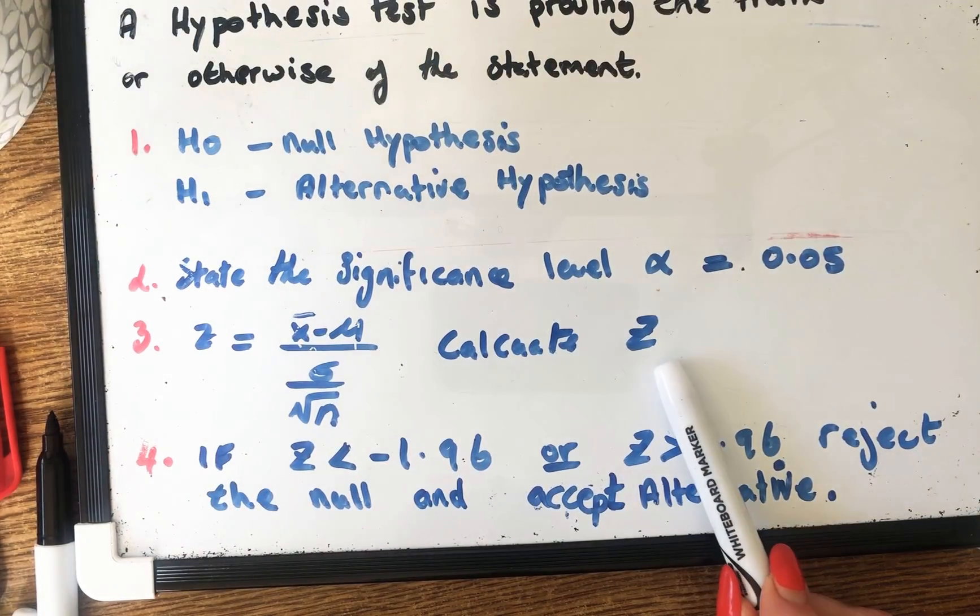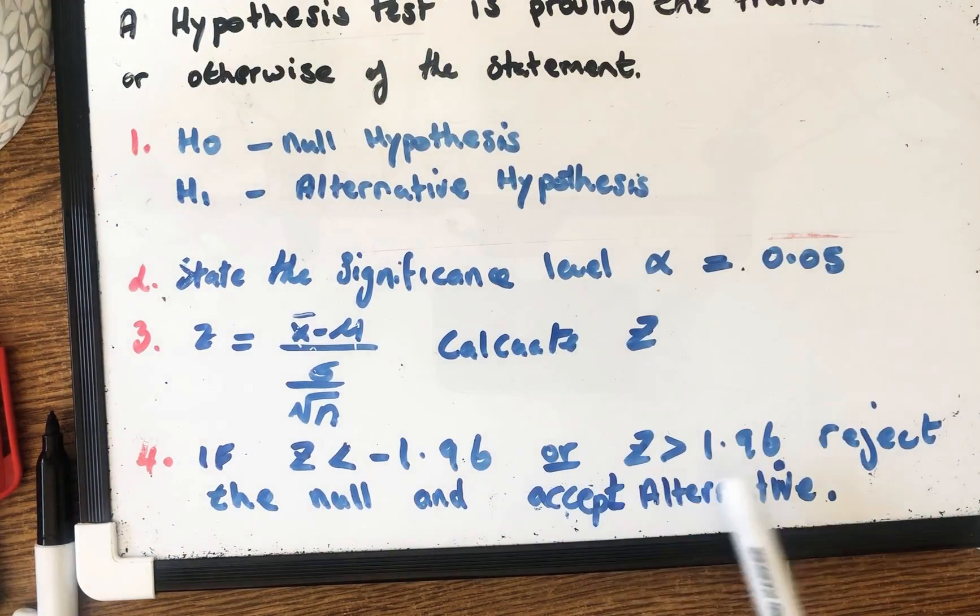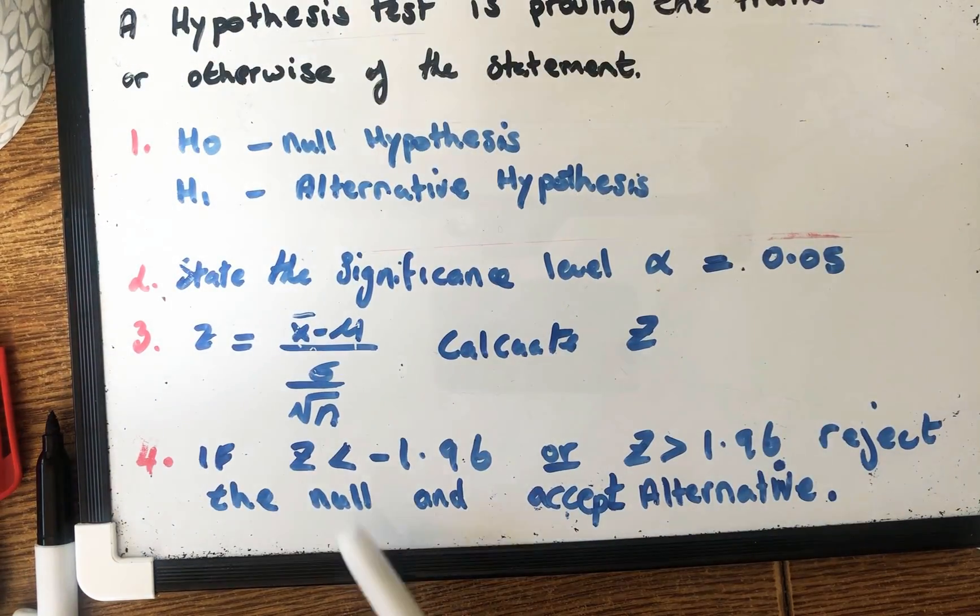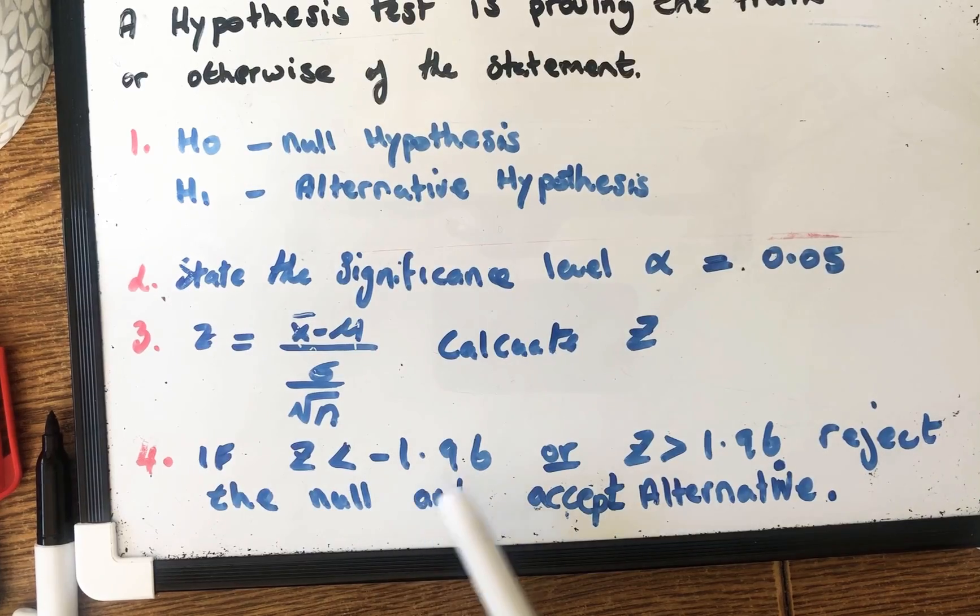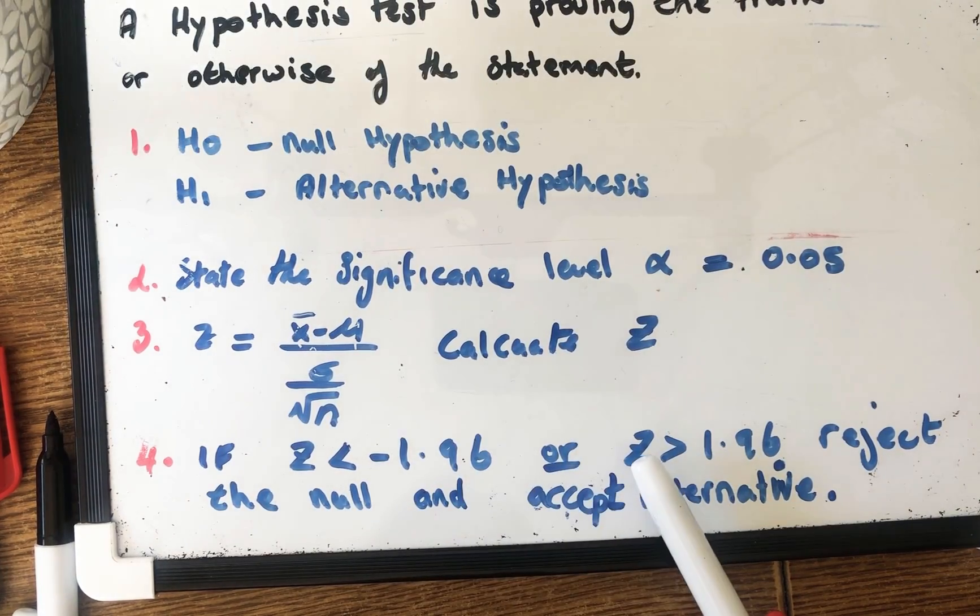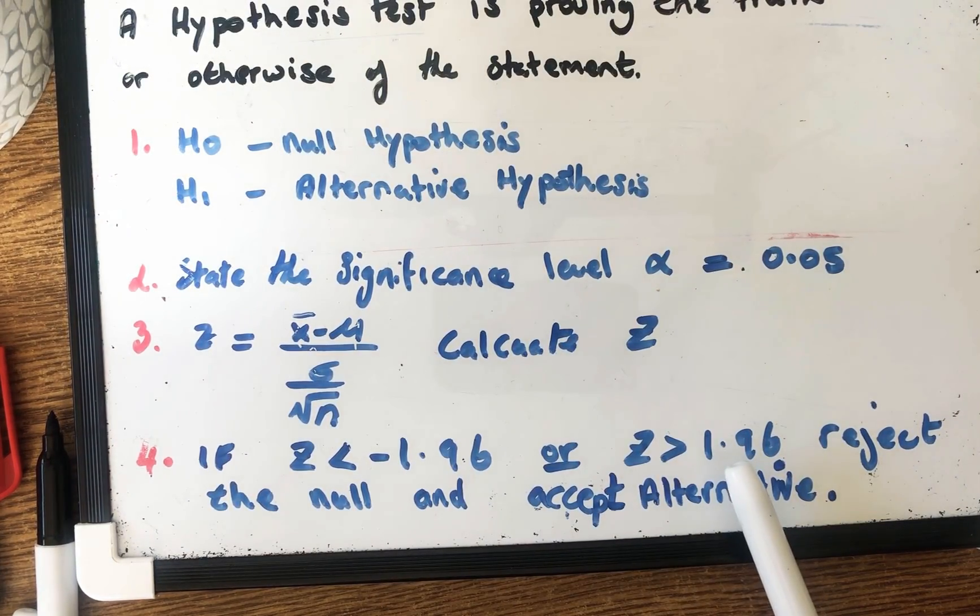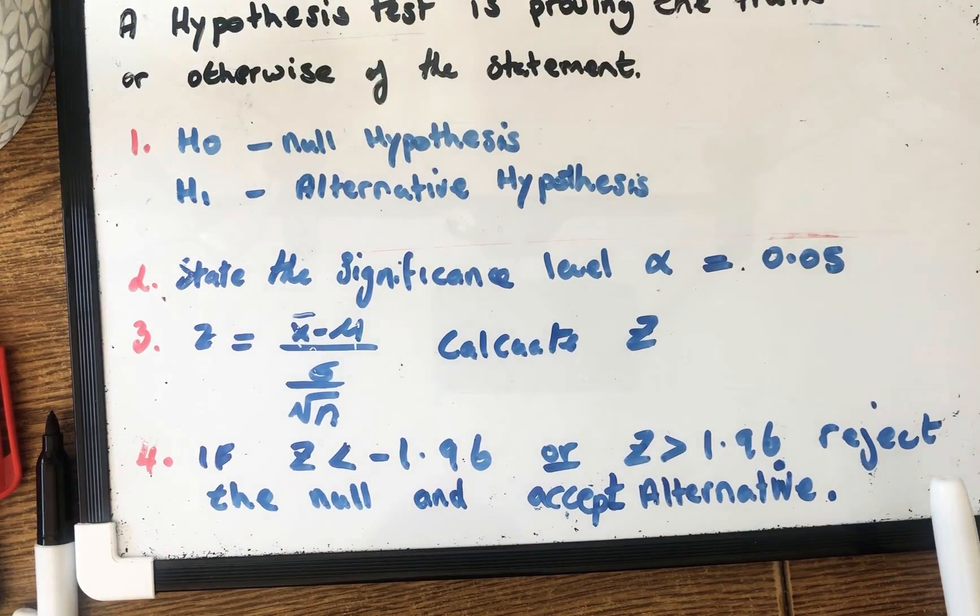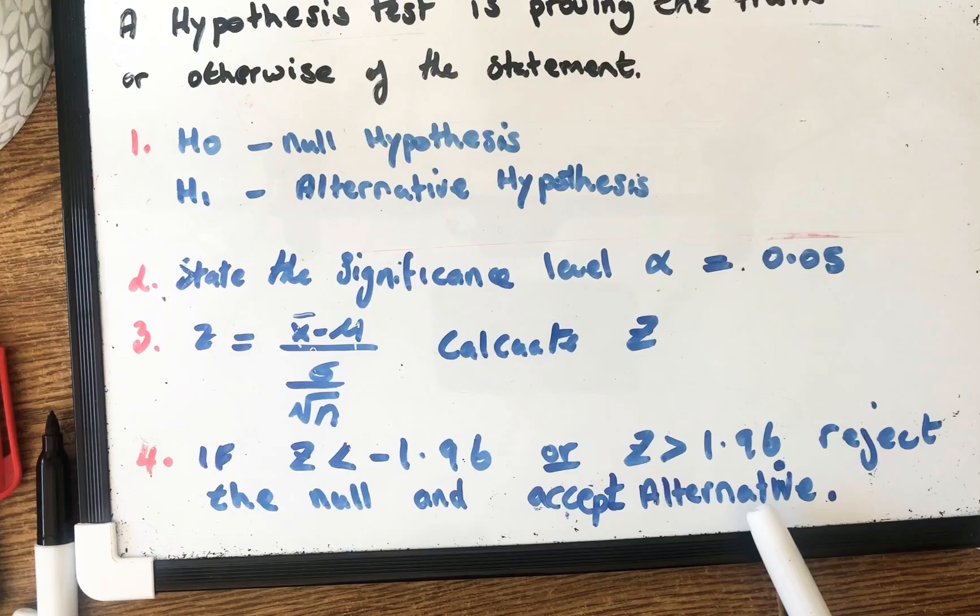So when we find the Z value we then have to look at two numbers. And these numbers you have to learn off. They're really, really important. So if your Z value is less than minus 1.96 or if your Z value is greater than 1.96, you reject the null.